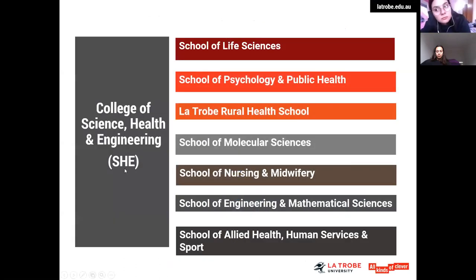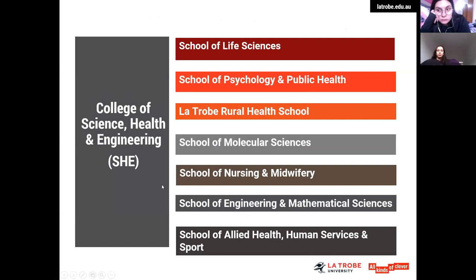The Bachelor of Health Sciences is owned by the College of Science, Health, and Engineering — referred to as SHE — and is delivered by three schools: the School of Life Sciences, the School of Psychology and Public Health, and the Lateral and Rural Health School. The first two schools are currently available here at the Bundoora campus, and the Lateral and Rural Health School is in Bendigo.